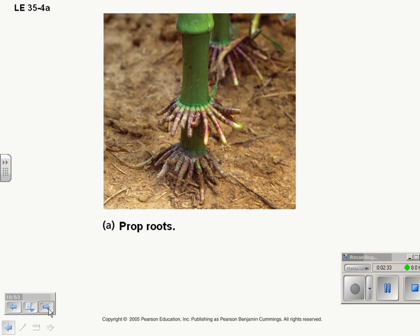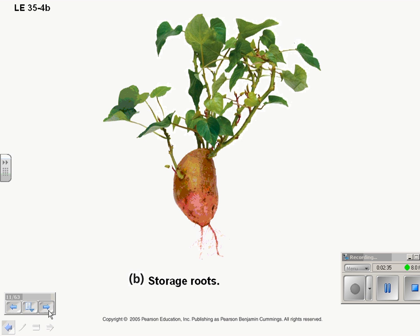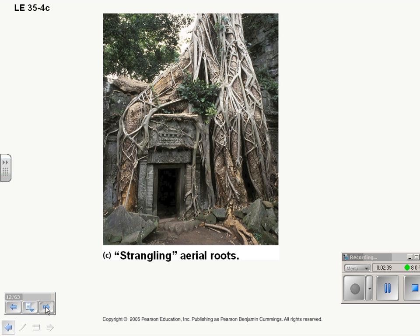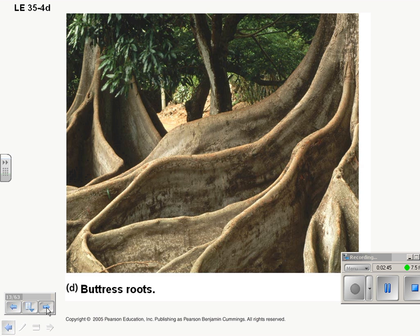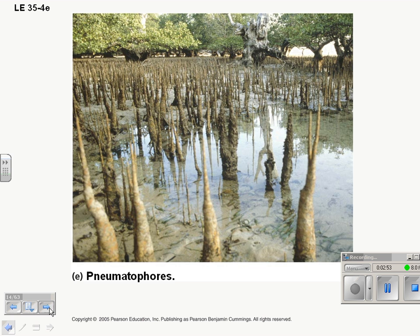Here are some examples of roots. We have corn here with prop roots that keep it off the ground. You have storage roots. We have aerial roots, which is, this is kind of a cool picture. Buttress roots, which are in some plants that are really thick roots that are above the ground to make it, help it stay up. And pneumatophores, which are actually roots that poke up above the water to get oxygen.